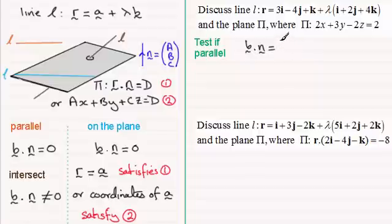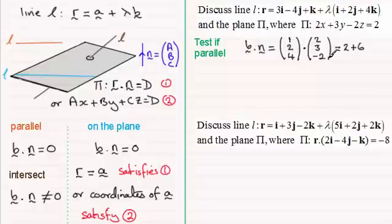So for this first example, I've got B dotted with N. And B will be the vector (1, 2, 4). And we need to dot that with the normal vector which will have components (2, 3, -2), the ABC that you see in the Cartesian version. So we've got (2, 3, -2). And if you dot those two together, you end up with 2 plus 6 plus minus 8. So we've got 8 minus 8 equals 0. So therefore we know that the lines are parallel.